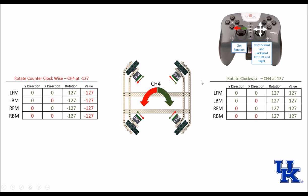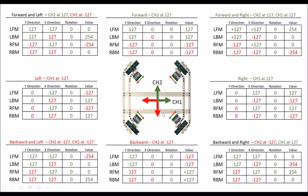It gets a bit more complicated with forward/back and left/right. When I take channel 2 forward, I set it to 127. I plug in the true value for my left motors — 127 — and the inverse value for my right motors — negative 127. Adding those together gives 127, a clockwise rotation for the left motors, and negative 127, a counterclockwise rotation for the right motors.